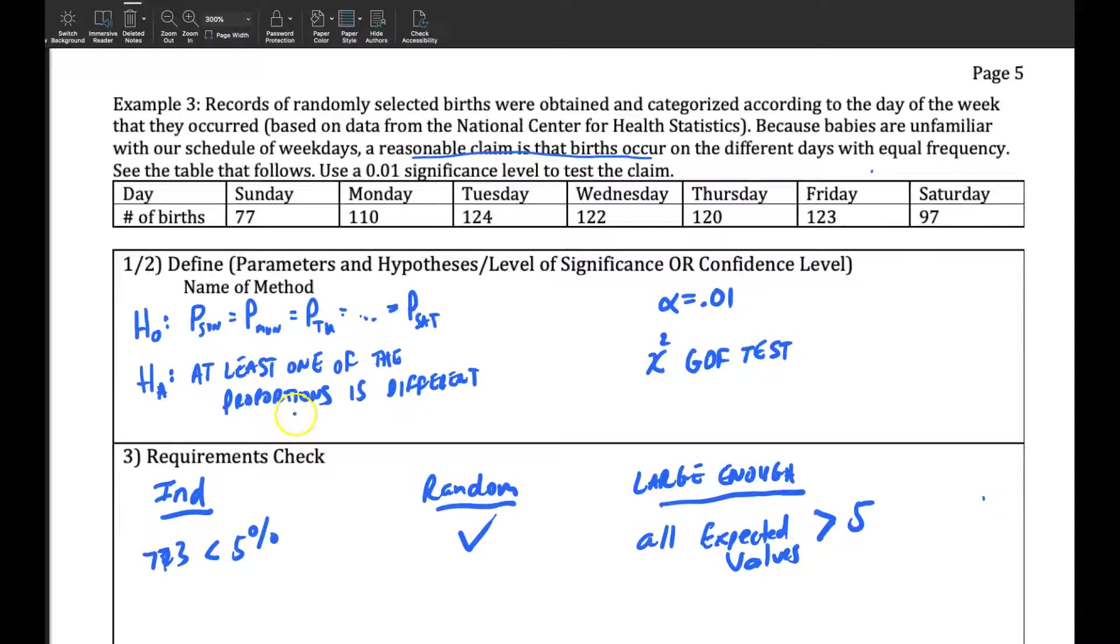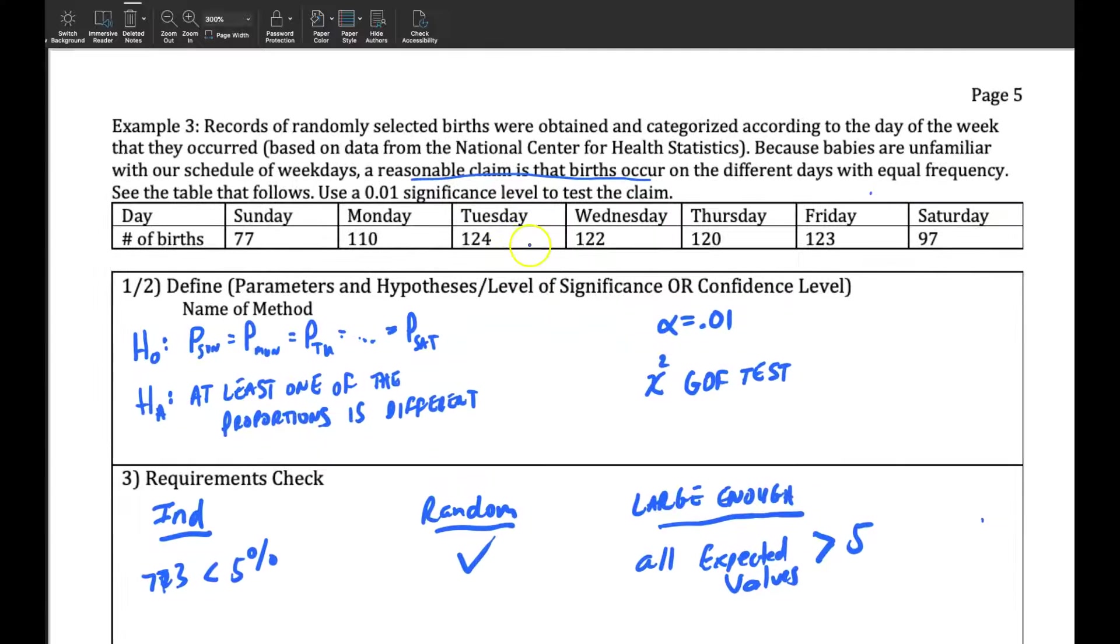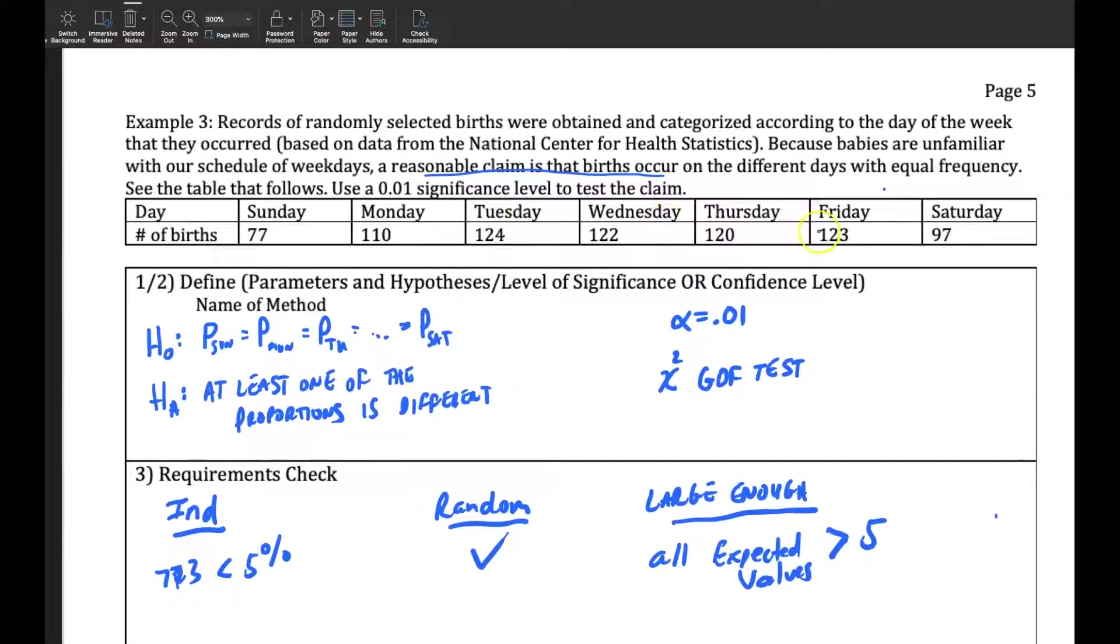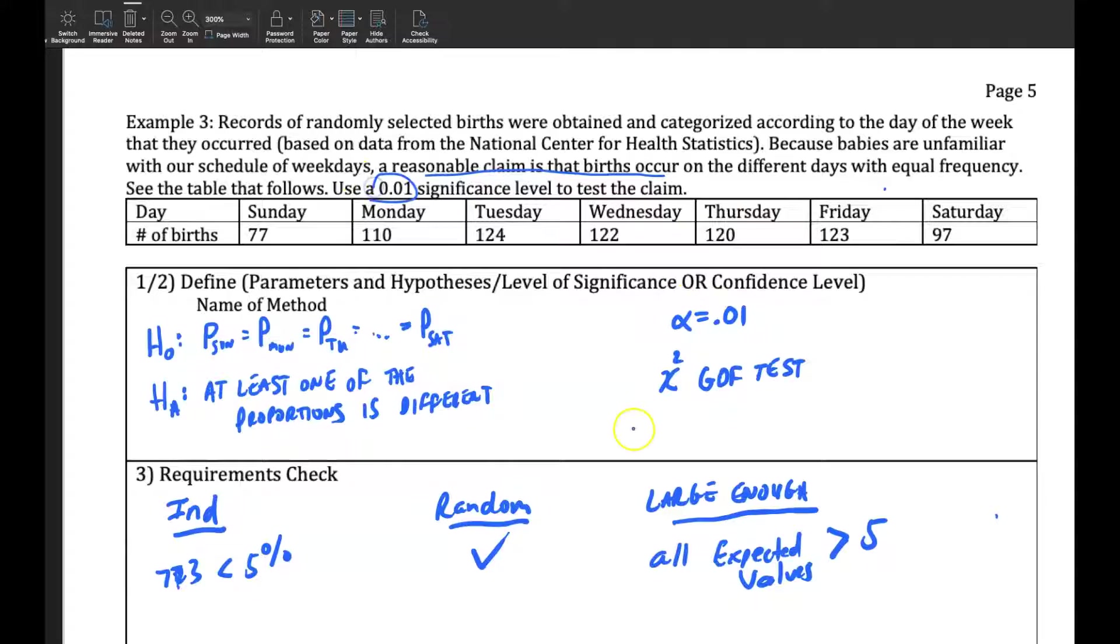Alternative is that at least one of the proportions is different, then it's not equal across if one of them is different. So goodness-of-fit test, chi-squared goodness-of-fit test, GOF, alpha 0.01, that's what we're going to try to do here.